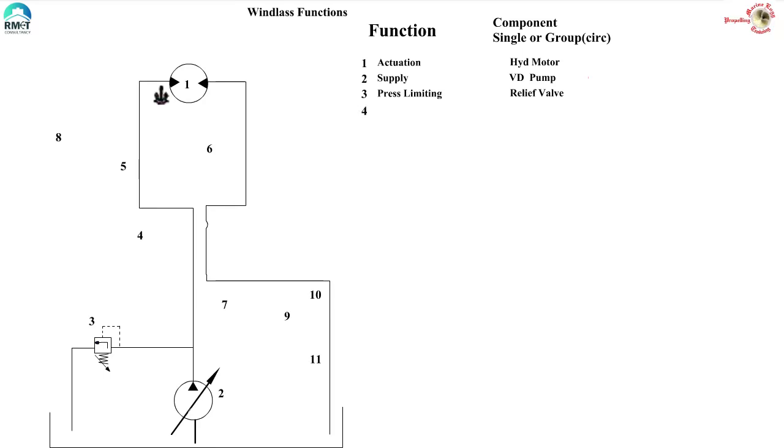Next, if I start the pump, the oil is entering the motor from left hand side and the anchor will lift up. Then, how can the anchor be lowered? I need to make the oil enter from the right hand side. The function here is reversing and the component doing the job in this circuit is direction control valve. To know more about the direction control valves, the type of valves and other details, please see my earlier video on direction control valves.